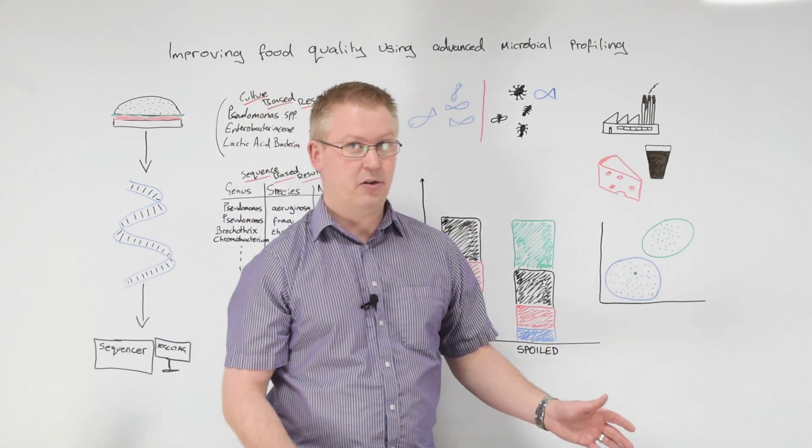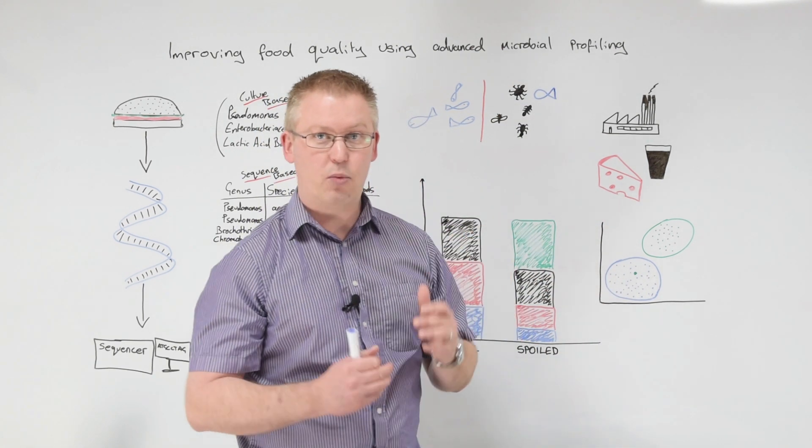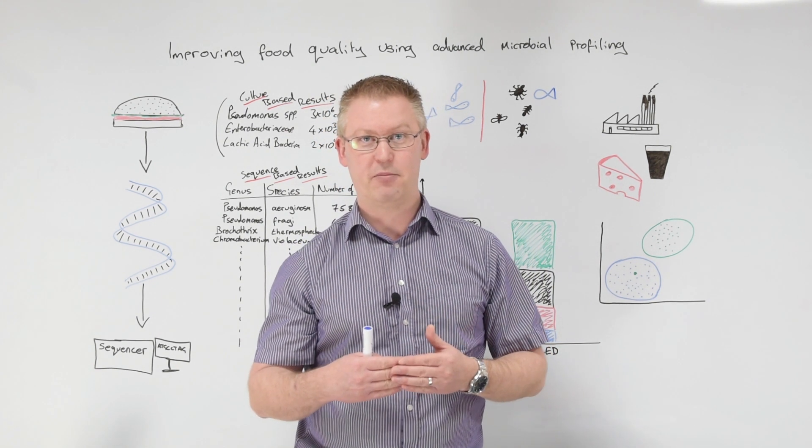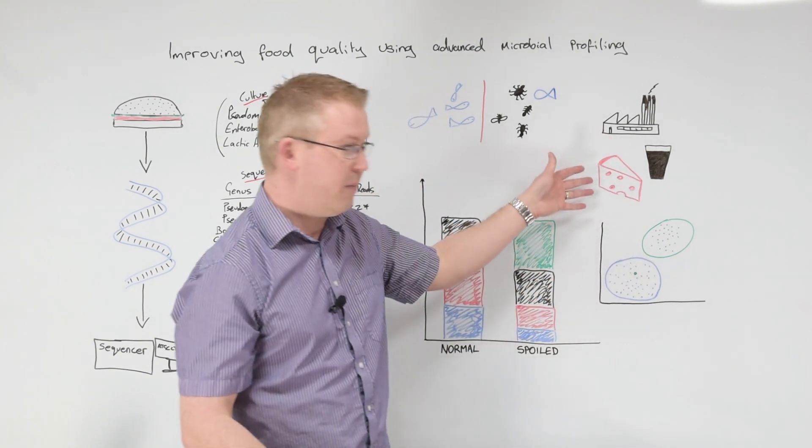It's not just spoilage investigations we can use AMP for. We can look at factory hygiene. So we can look at whether or not a clean area is in fact a clean area by looking at the population of microbes there compared to other areas of the factory.